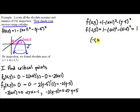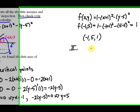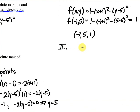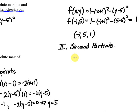Now the second step is to determine the behavior of the function at that point. Our tool for doing that — besides inspection — is to use the second partials test. That means we're going to have to find the second order partial derivatives at (−1, 5), so let's find fxx at (−1, 5) first.